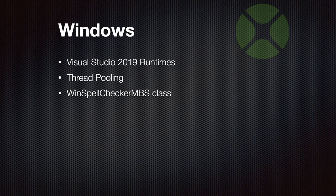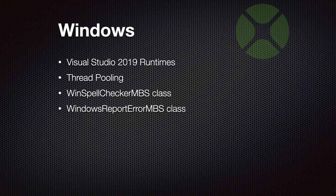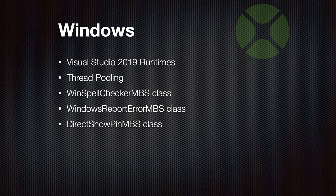We got the WinSpellChecker class which allows you to implement spell checking within your Xojo application — you can pass in some text, get the spelling errors, and suggest replacements for the user. We also got a Windows report error class to create entries in the Windows event log so administrators can find errors for server applications just like any other background service. We improved our DirectShow classes for recording audio and video on Windows with a new pin class and related methods, so you can identify individual components on a camera — for example a microphone may have a pin for left or right audio so you can individually control them.